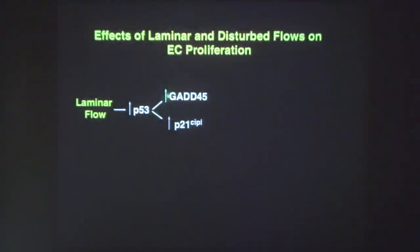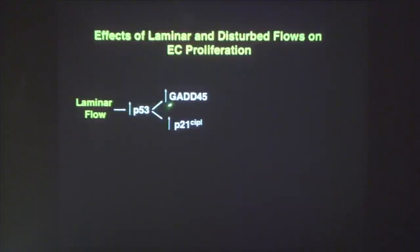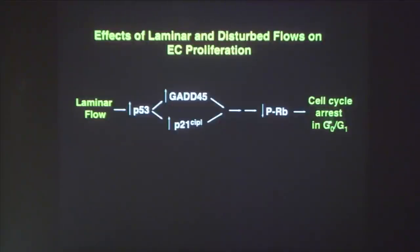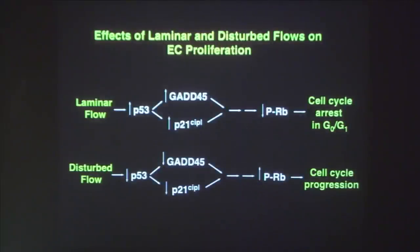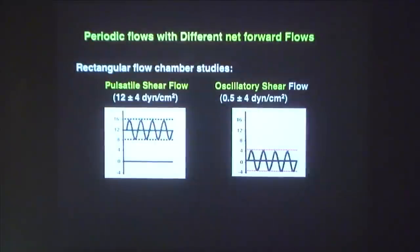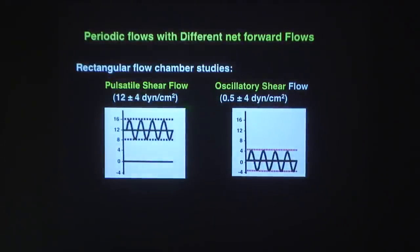For proliferation: laminar flow increases p53 and growth arrest genes GADD45 and p21, causing decreased phosphorylation of retinoblastoma protein and cell cycle arrest in G0/G1 phase. Disturbed flow does the opposite — increases RB phosphorylation and makes the cell cycle progress, increasing proliferation. Laminar flow therefore decreases proliferation.